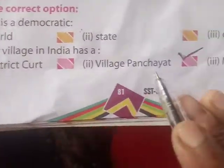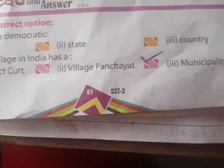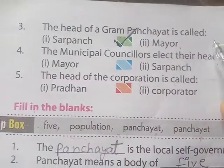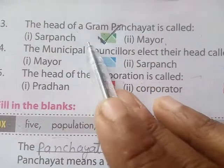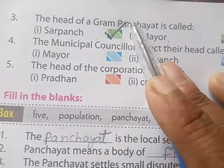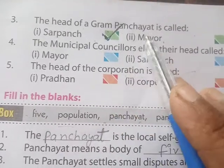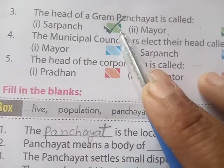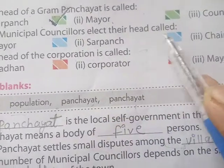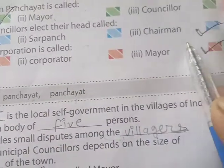Question three: The head of a gram panchayat is called — options are sarpanch, mayor, and councillor. Answer: The head of a gram panchayat is called sarpanch. Question four: The municipal councillors elect their head — options are mayor, sarpanch, and chairman. Answer: mayor.